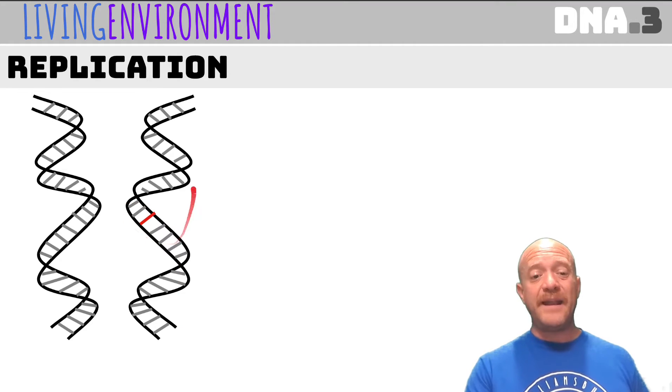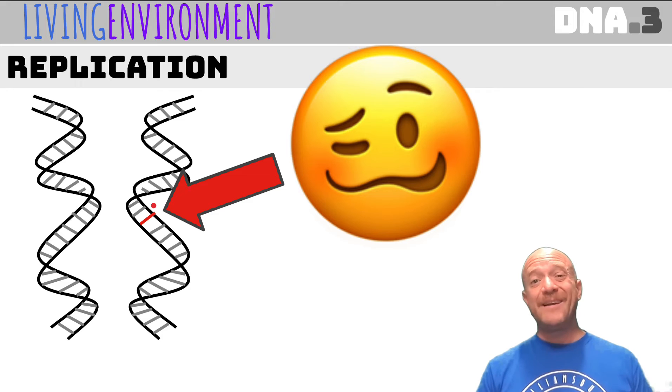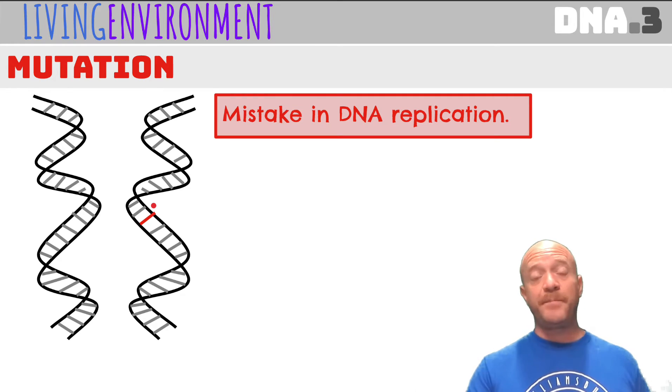But sometimes you might have a base that doesn't match up or that is different from the original one. Mistakes do happen. There are usually enzymes that go in and fix it, but sometimes bad things happen and we need to fix them. And if they're not able to be fixed, then it is called a mutation. And a mutation is simply just a mistake in the DNA replication.